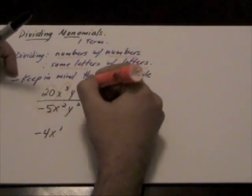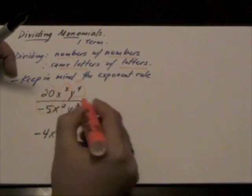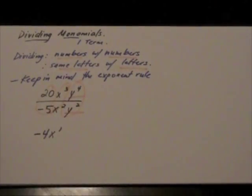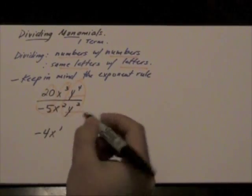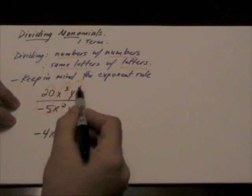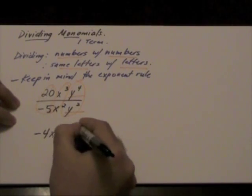We're going to divide our next set of letters, y to the power of 4 divided by y to the power of 2. So the base stays the same, we have y. 4 minus 2 will give me 2.